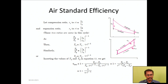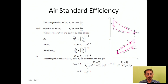Substituting T2 and T3 into the efficiency equation, we finally obtain: η = 1 − 1/R^(γ−1), where R is the compression ratio and γ (gamma) is the specific heat ratio — the ratio of specific heat at constant pressure to specific heat at constant volume. For air, γ = 1.4.